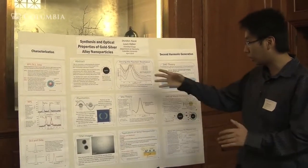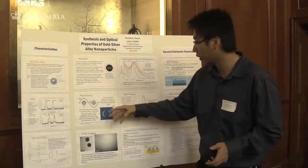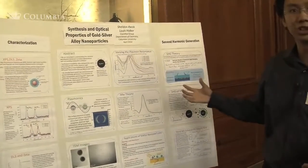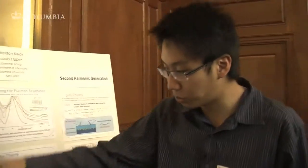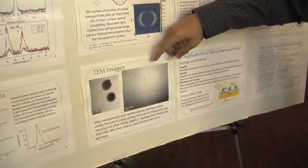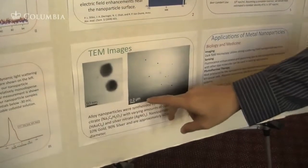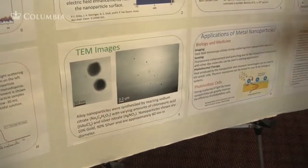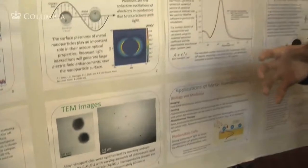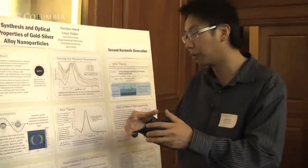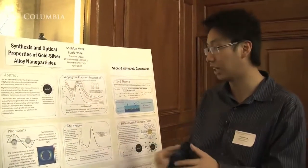I want to talk a little bit about metal nanoparticles first. These metal nanoparticles have been really interesting the last several years — not only because they're really small. These are some transmission electron microscope images of these nanoparticles. These ones are 60 nanometers, and it's really hard to appreciate how small these are without looking at the microscope.